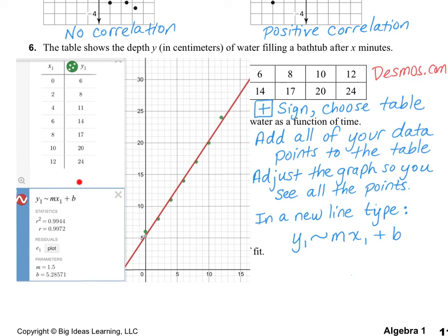Just FYI, if I created a new data table underneath here, it would become X sub 2, Y sub 2. So then if I wanted to create a new line of best fit, I would have to change this to Y sub 2 and X sub 2, so that it took from that other data set.